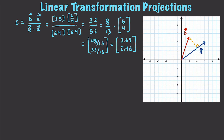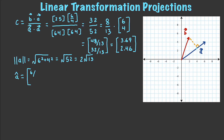That was one way to find the projection. Now with a linear transformation we can find every projection onto A. To do this we first normalize A so it points in the same direction but has a length of one. The magnitude of A is √(6² + 4²) = √52 = 2√13, so A-hat is (6/(2√13), 4/(2√13)).